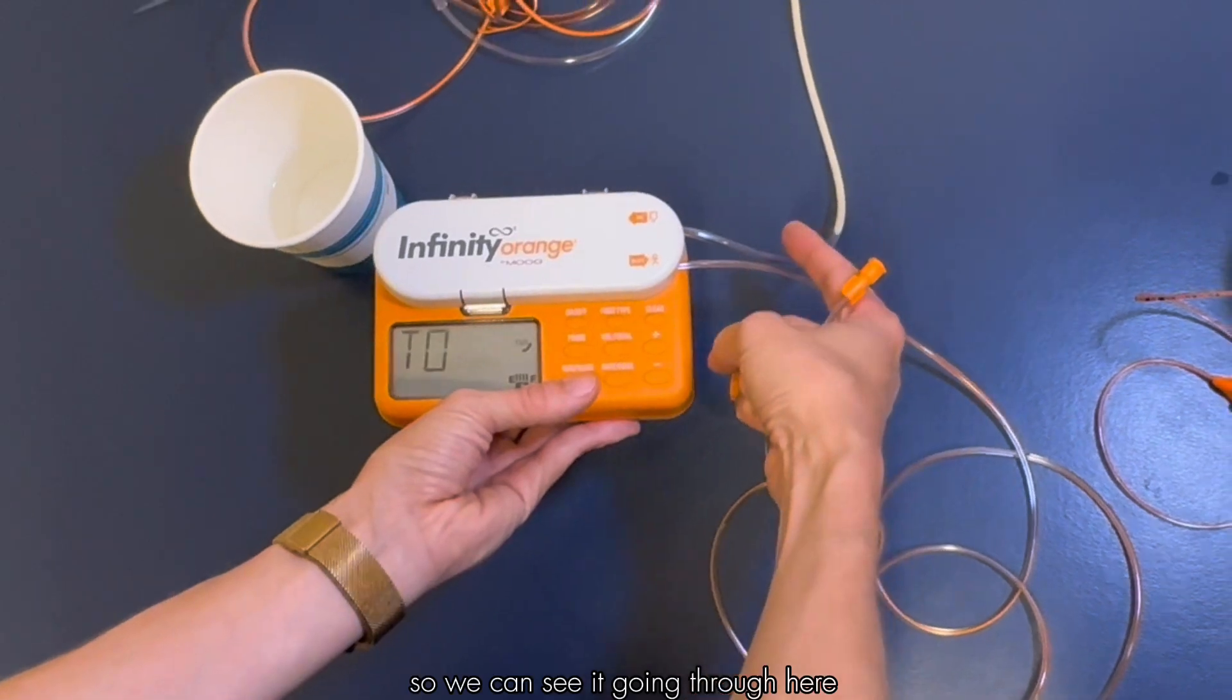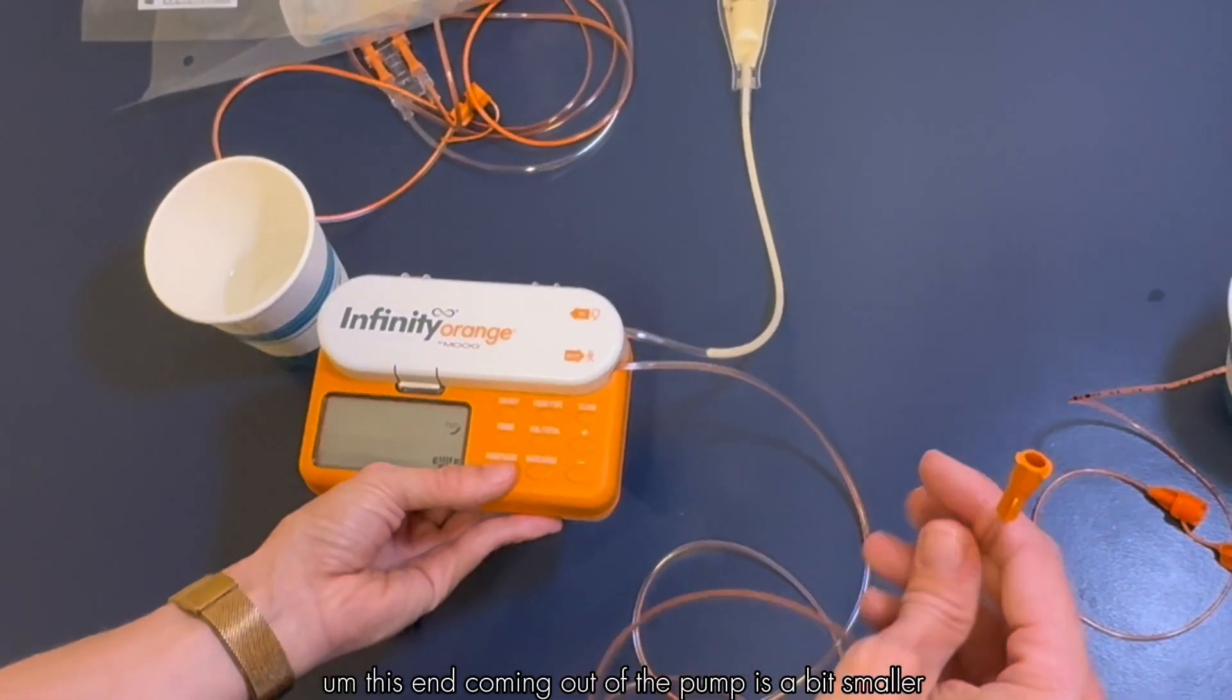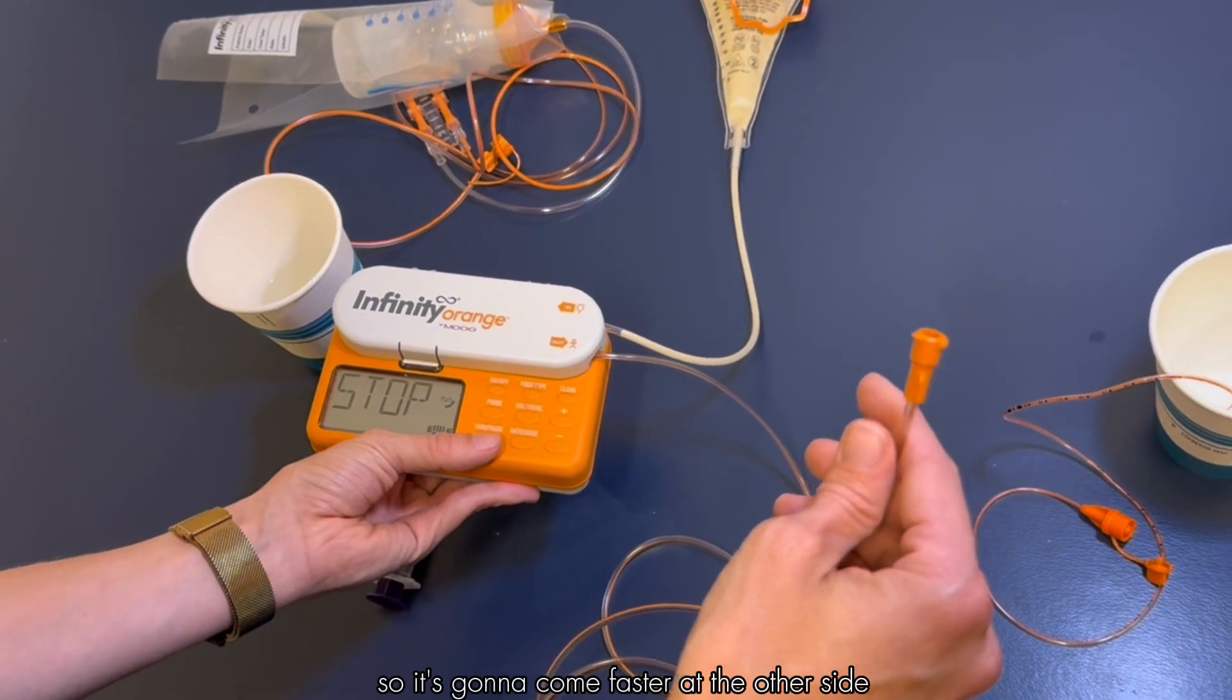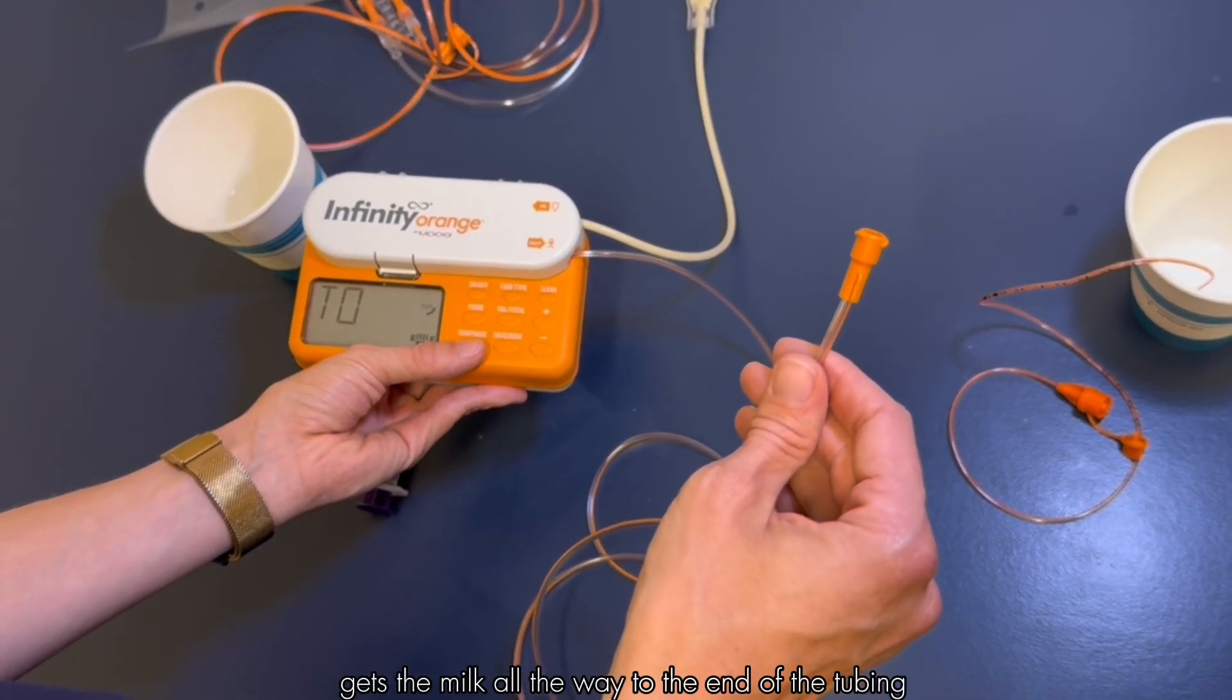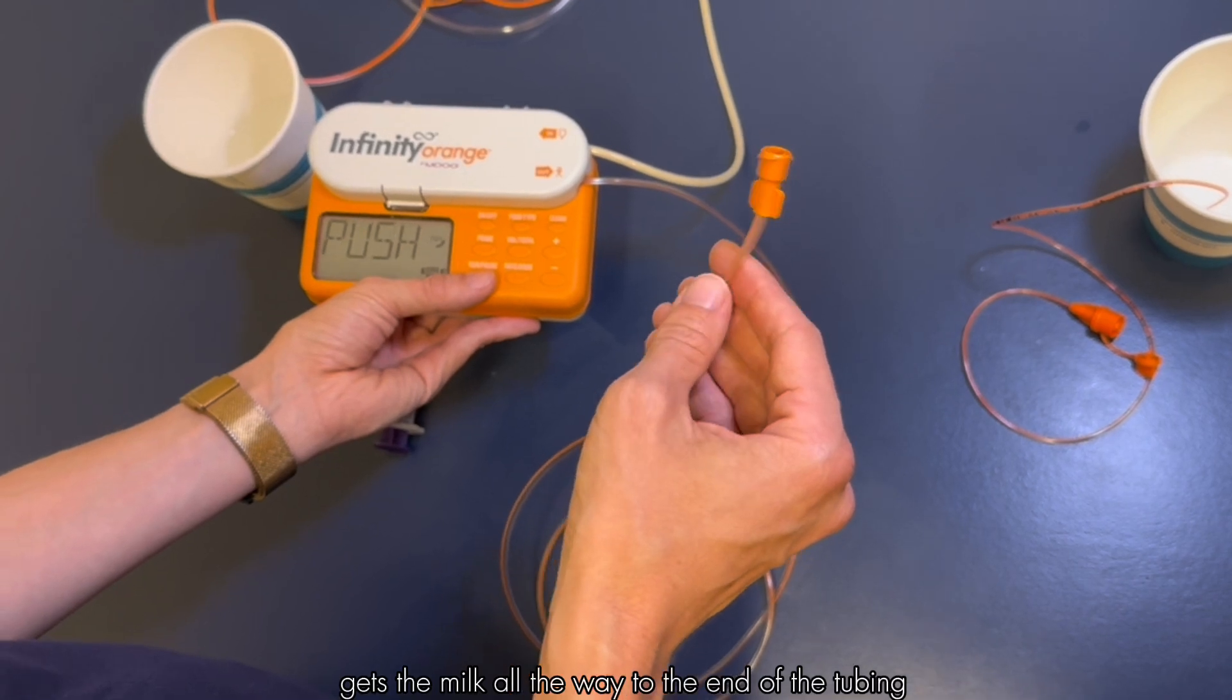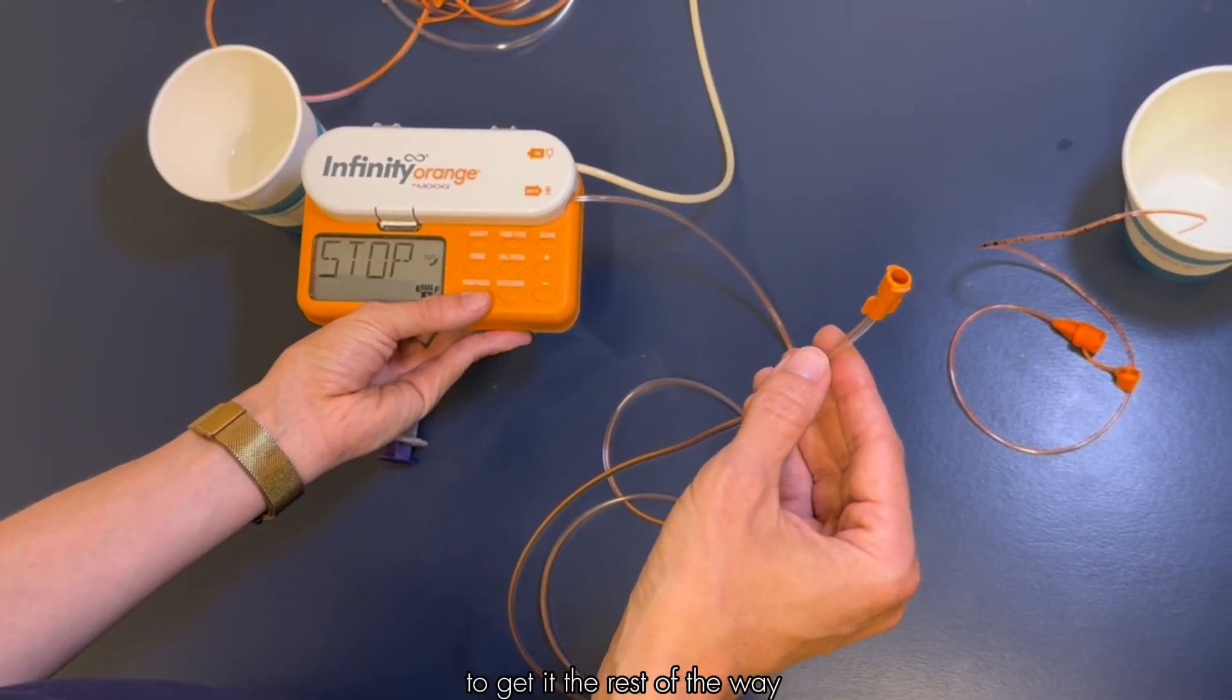We can see it going through here. This end coming out of the pump is a bit smaller so it's going to come faster at the other side. It might be that auto prime gets the milk all the way to the end of the tubing or it might stop a little bit before and then we can just hit the prime button again to get it the rest of the way.